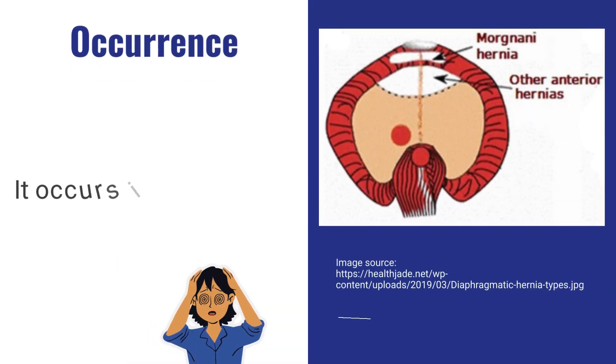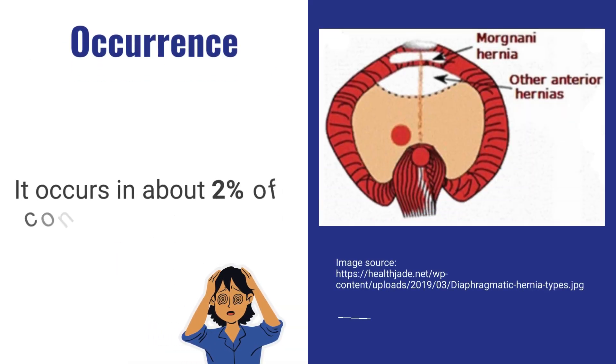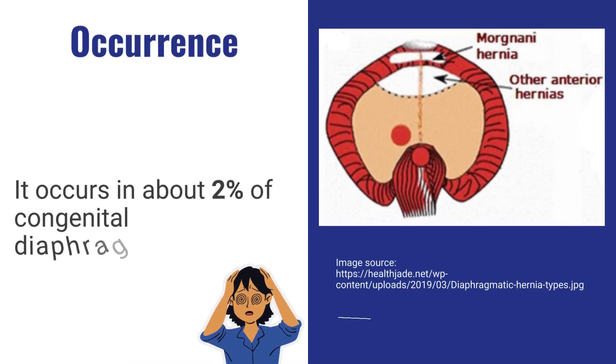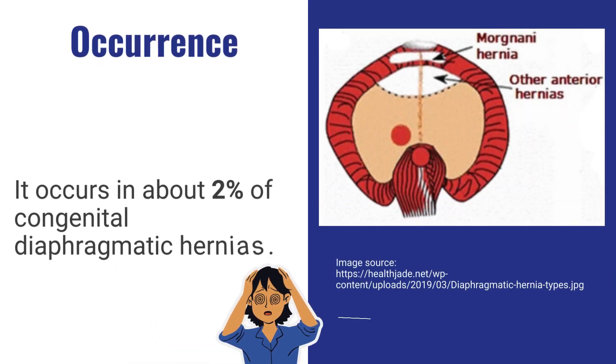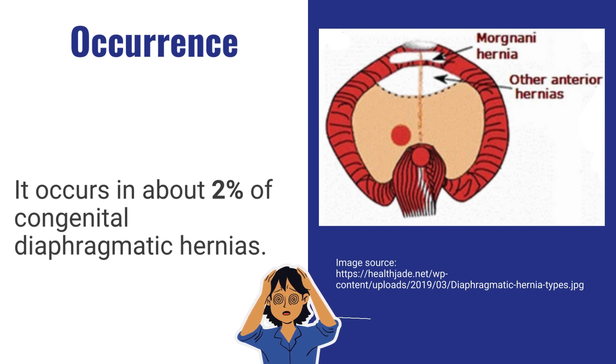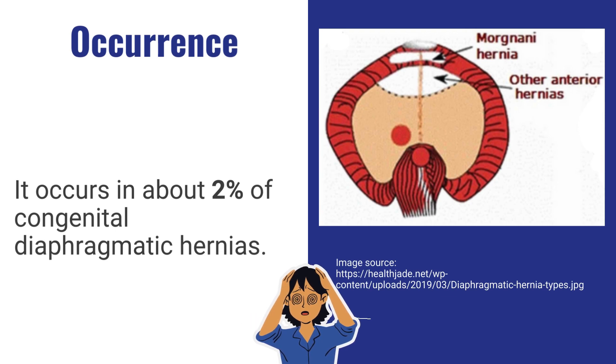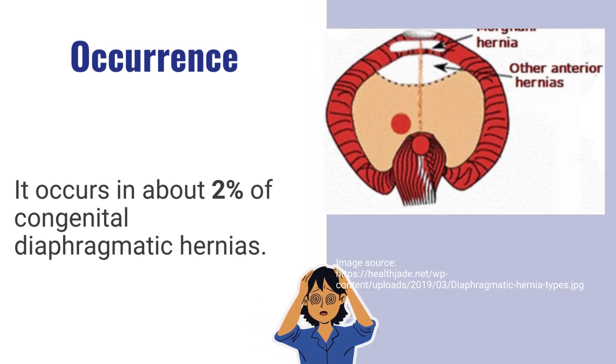Ratio of occurrence: it occurs in about 2% of congenital diaphragmatic hernias. It is a rare hernia.